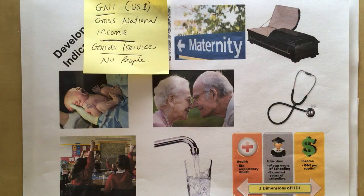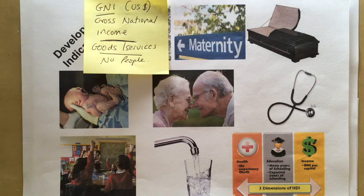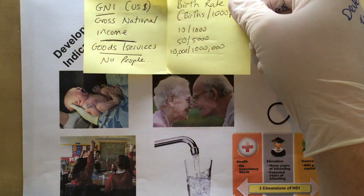For example, the GNI in the UK is about $43,000 — remember it's dollars, not pounds. In Zimbabwe, the Gross National Income is about $840. You can see there's a huge difference, and that starts to tell us about a country and how much money, on average, people would earn.